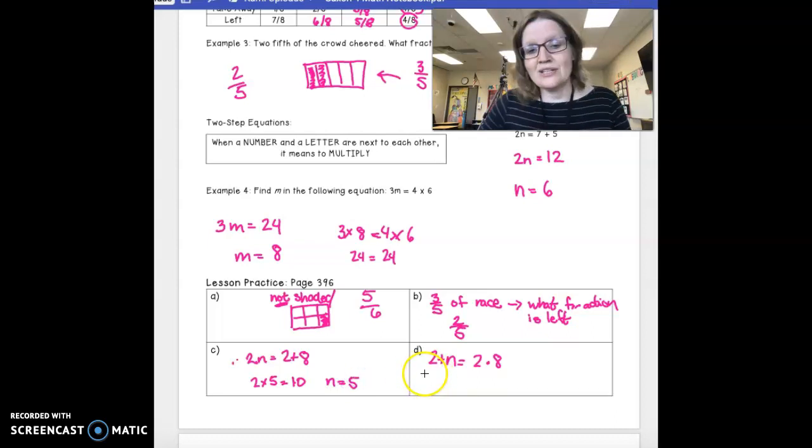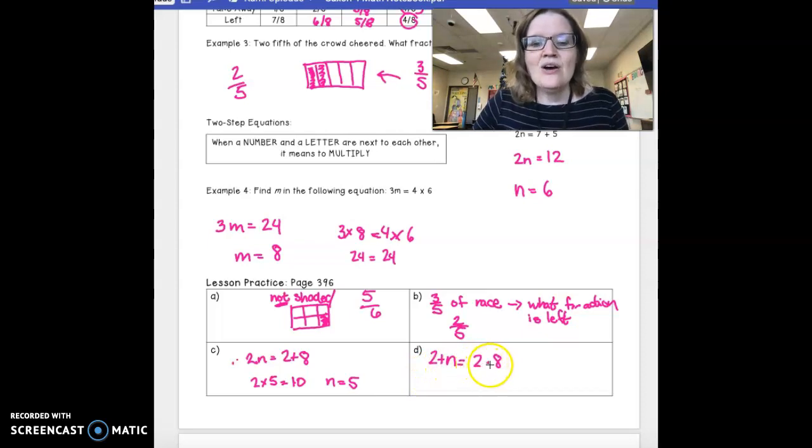And finally, I've got to give you a little heads up. This was mentioned just very casually in the book. When you see two numbers with a dot in the middle, that is another way of saying that the numbers are being multiplied. So, 2 plus n equals 2 times 8.